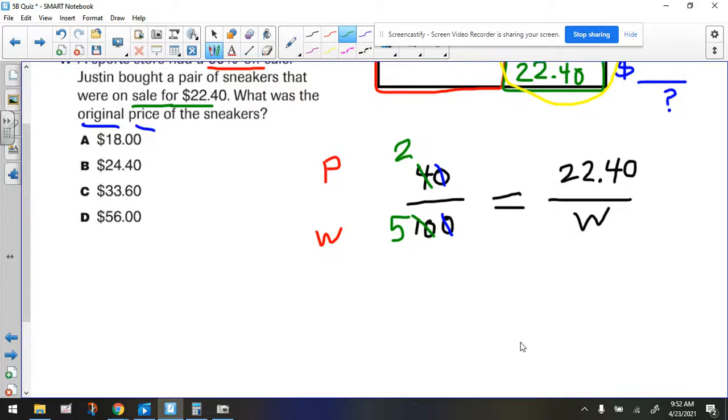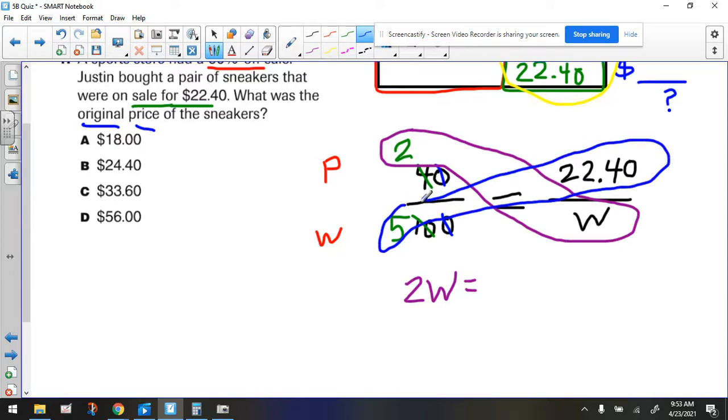Now, if we're going to use cross products, which is what I recommend in this case, let's take a look at what that would look like. So one of the cross products would be 2 times W. Let's write that down. Our other cross product would be, let's use blue, would be this times this. 5 times 22.40.